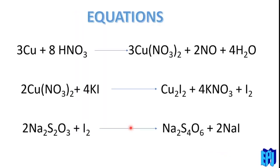These are the equations involved. First: 3Cu + 8HNO3 → 3Cu(NO3)2 + 2NO + H2O — this is the formation of the brass sample in solution by adding nitric acid, where an oxidizing agent is used. Then Cu2+ reacts with iodide: Cu2+ is converted to Cu+ as Cu2I2, and at the same time iodine is produced in solution.